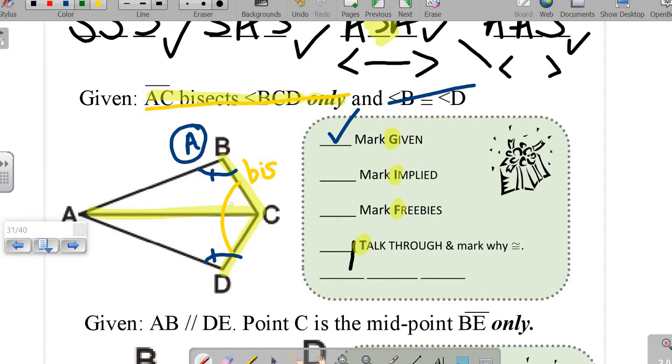Implied, because of the bisector, of course, it's implied that this angle and this angle are congruent. So we have another pair of angles, one A for each pair.